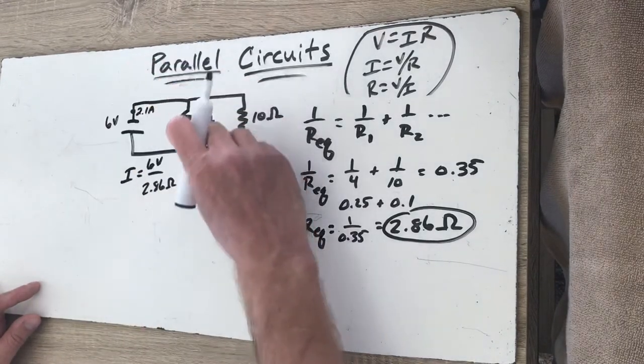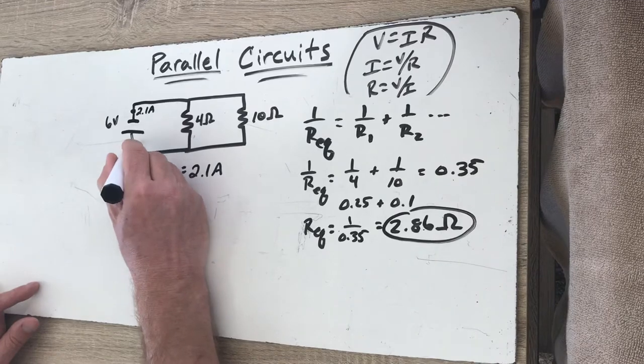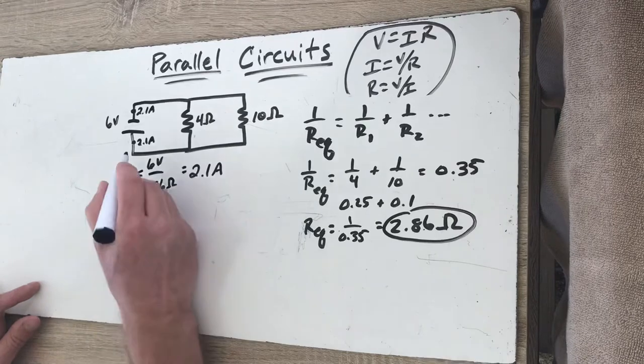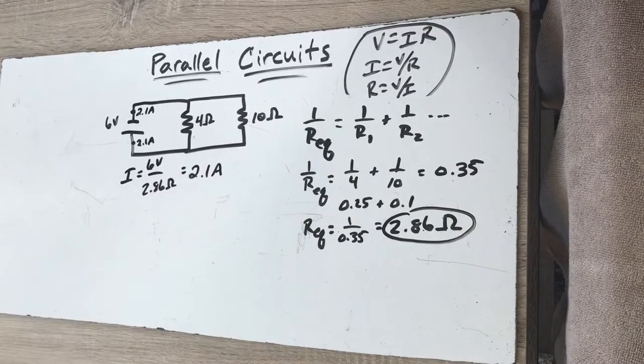That's what the battery experiences, it's what it feels. And when I divide those I get a value of 2.1 amps. So that means there is 2.1 amps coming out of the battery. And after it goes through these two different pathways, I should also have 2.1 amps of current entering at the other end of the battery. So those two things should always be the same.